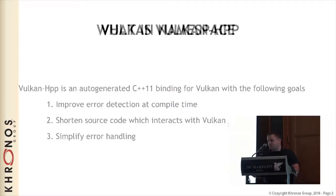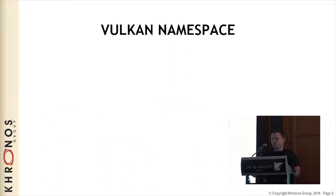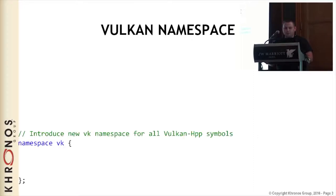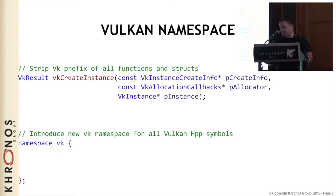Since we want to coexist with the C API, we introduced a new namespace for Vulkan - VK obviously. Each and every symbol you find in Vulkan you will also find in the VK namespace. We stripped the VK prefix everywhere so that you don't have to type VK twice.